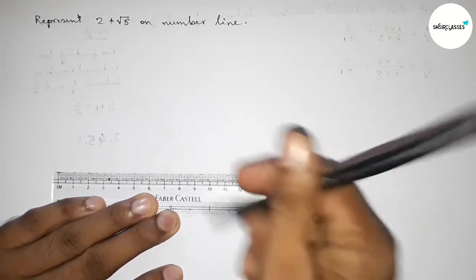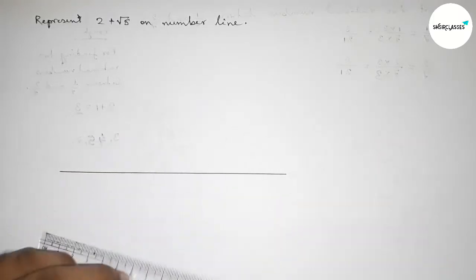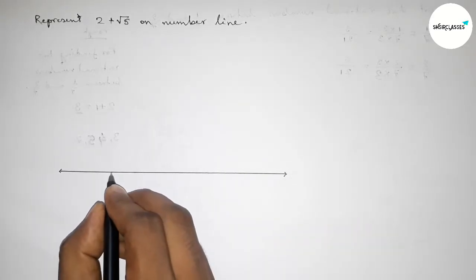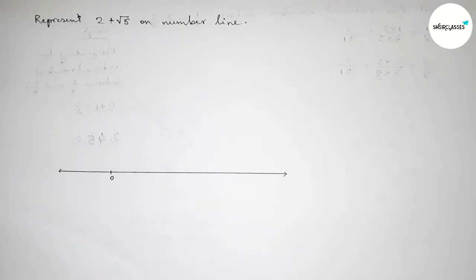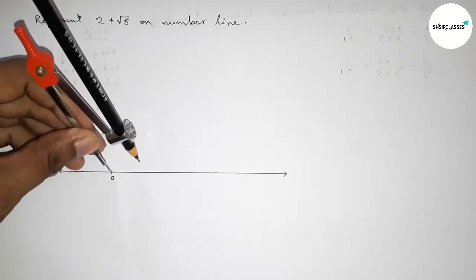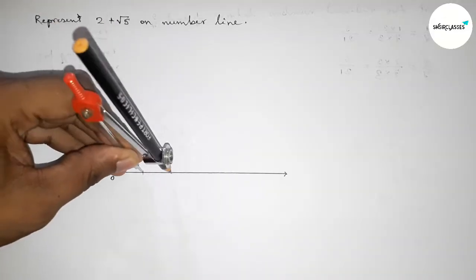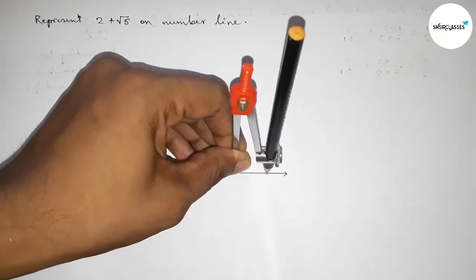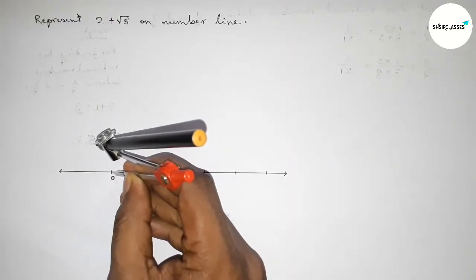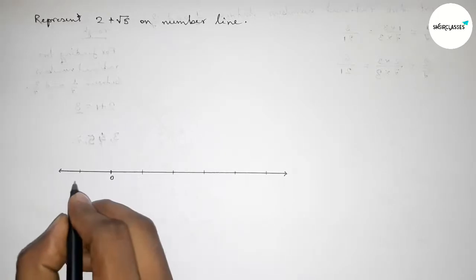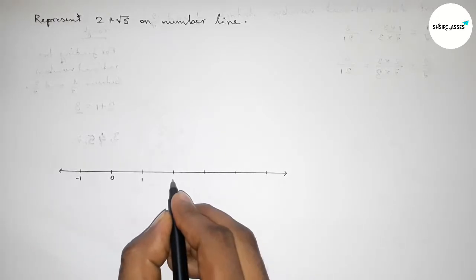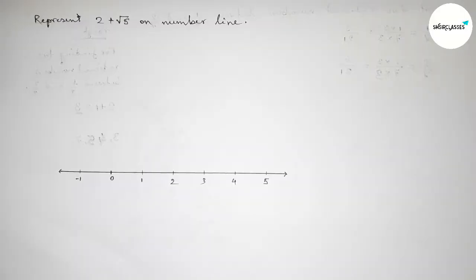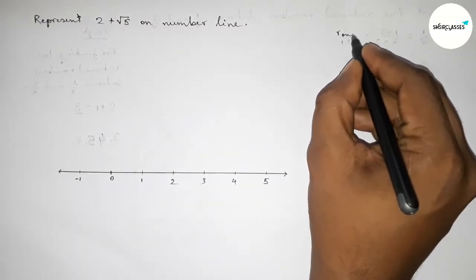First of all we have to construct a number line. Drawing here a line of any length and taking arrow marks on both sides and marking zero. By using compass and taking any length, marking the numbers on the line — the compass length is one unit. So constructing a number line, taking points at minus 1, 1, 2, 3, 4, 5 and continuing.